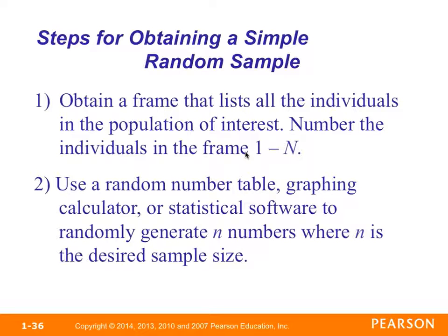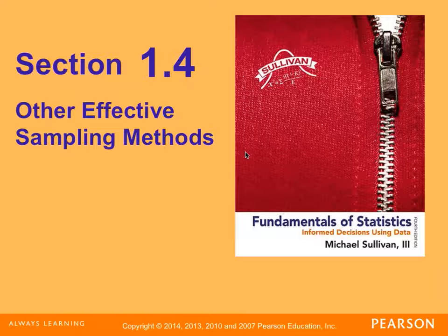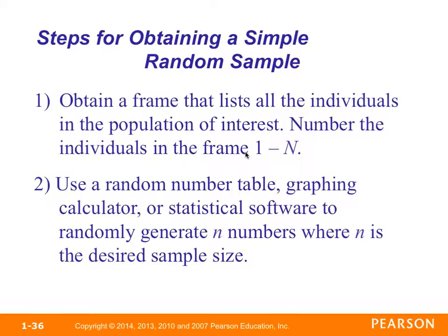To obtain a simple random sample, you obtain a frame — a list of all individuals in the population of interest — and number the individuals from 1 to N. You then use either a random number table, graphing calculator, or statistical software to randomly generate n numbers, where n is the desired sample size. In your homework you'll be doing this with a random number table, and the book walks through an example.